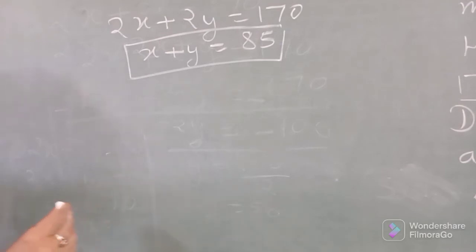Second equation हम बनाएंगे legs के लिए. 2 legs हैं ducks के और 4 legs हैं cows के, so 2x plus 4y equals 270.